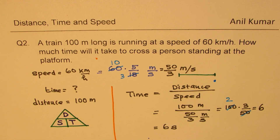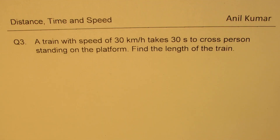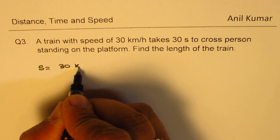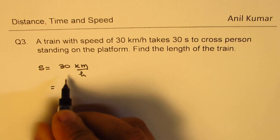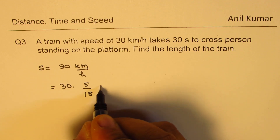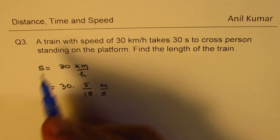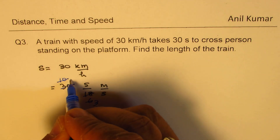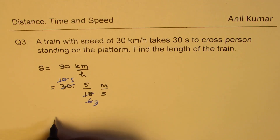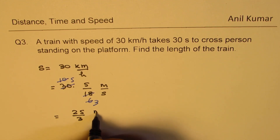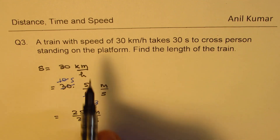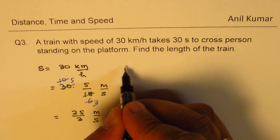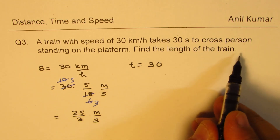For question three, a train with a speed of 30 kilometers per hour — we convert this to meters per second by multiplying by 5 over 18. Simplifying by dividing by 3 and then by 2 gives us 25 over 3 meters per second. The train takes 30 seconds to cross a person standing on the platform, so time t equals 30 seconds, and we need to find the length of the train.